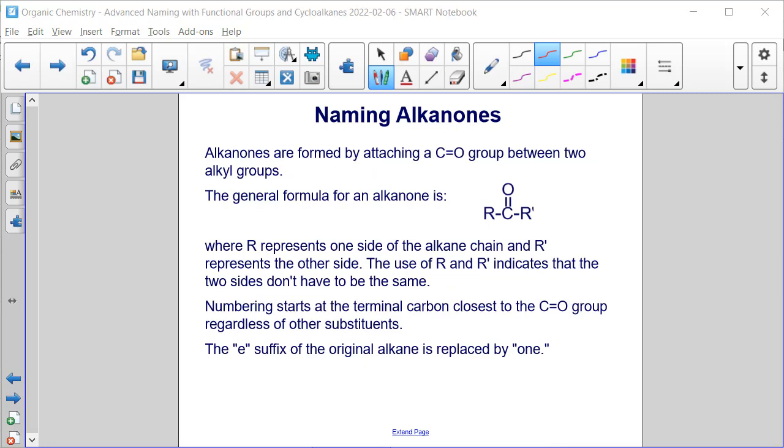Alkanones are similar to alkanals because they have a double bonded oxygen. But they're between two carbon-carbon chains, two alkyl groups. So instead of an H here, like we had for an alkanal, we have another R group. R represents one side of the alkane chain, and R prime represents the other side. So think about like one big long carbon-carbon chain, and somewhere in the middle you have a carbon double bonded to an oxygen. The two sides here don't have to be the same, so it's not like this is coming right in the middle of the chain.